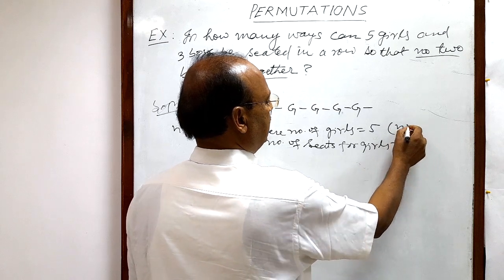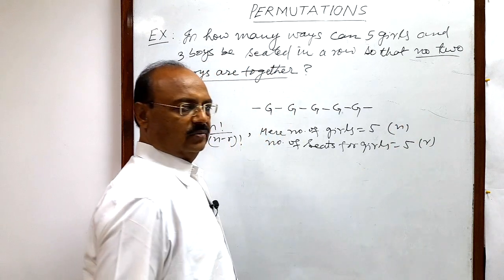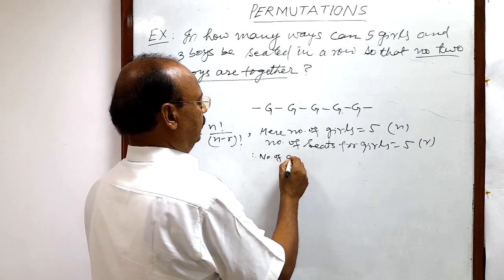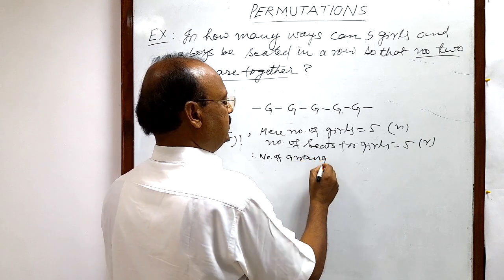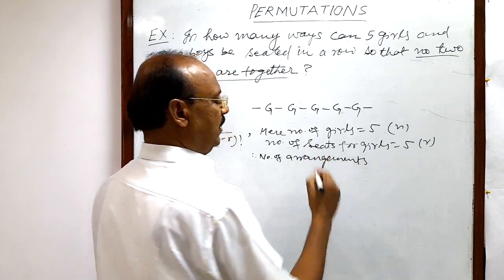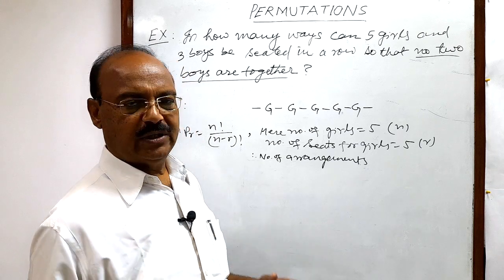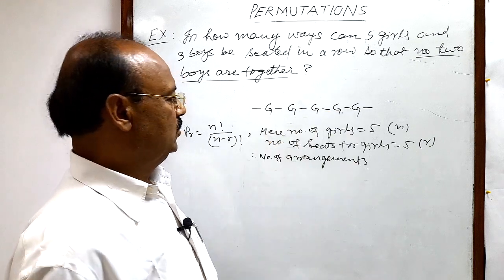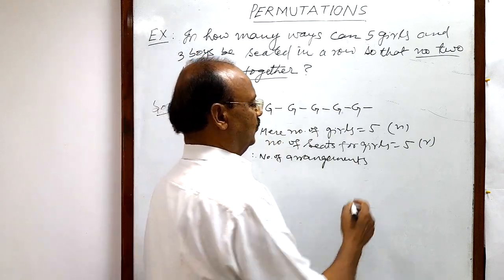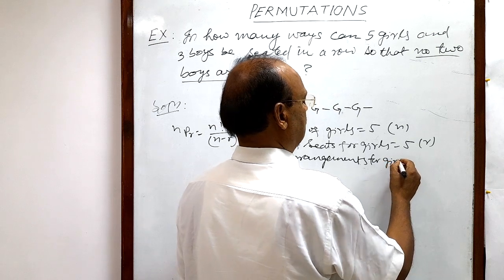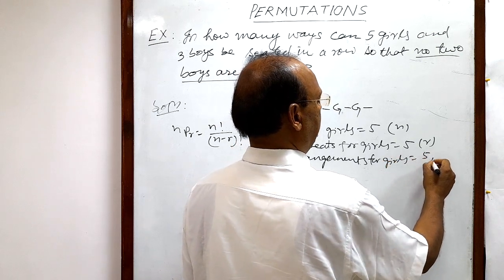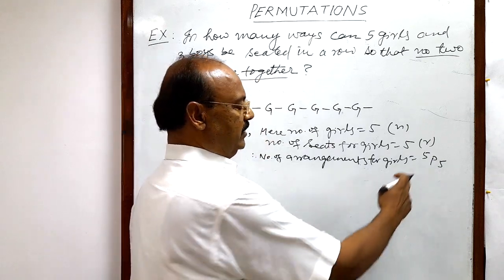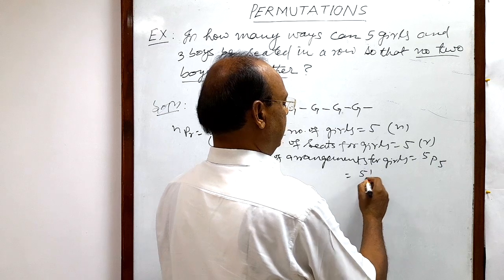Here, number of girls is equal to five and number of seats for girls is also five. So this can be supposed as N and this can be supposed as R. Therefore number of arrangements for girls is five P five. And let us calculate this.